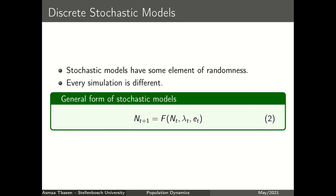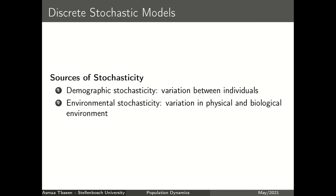Let me slow down a little bit here and talk about the sources of stochasticity first. There are two sources of stochasticity that we usually consider when modeling population dynamics: demographic stochasticity and environmental stochasticity. Demographic noise is used to capture the differences or variation between individuals within the population, since each individual has a different level of fitness — fitness here refers to the individual's reproductive success. The environmental noise term is used to characterize the physical and biological changes in the environment around any species.